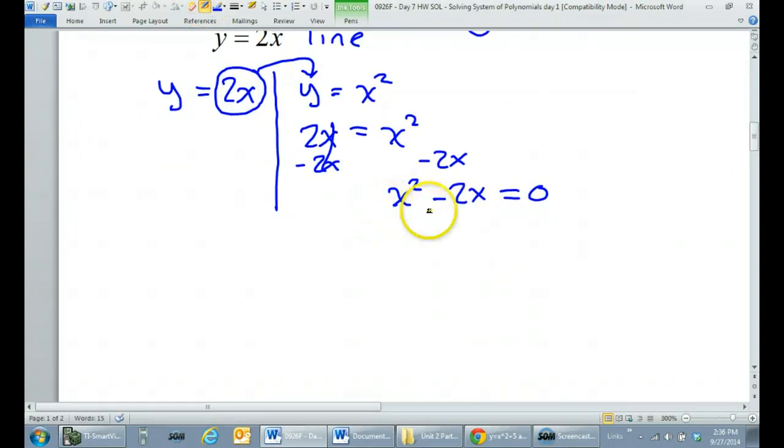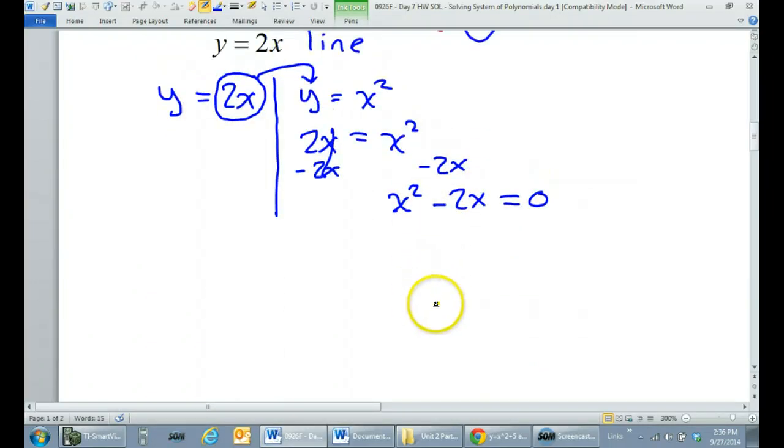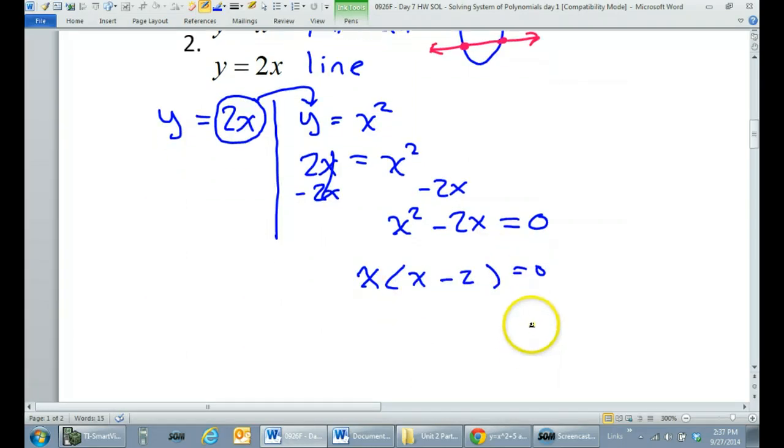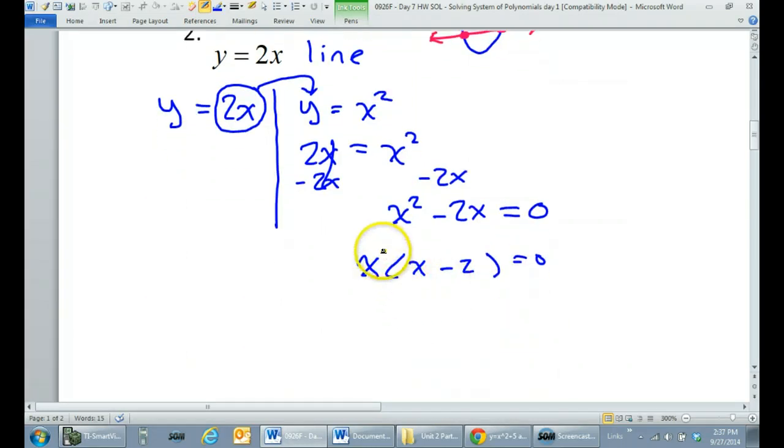Some kids get freaked out. There's no c value. There's no constant. What do I do? But I just give them the hint. What is the first step of factoring? And, of course, the answer is GCF, greatest common factor. The common factor here is x. So you would pull out that x. And that's going to leave you with x minus 2. Now, what do you do with this? As always, you set the factors equal to 0.